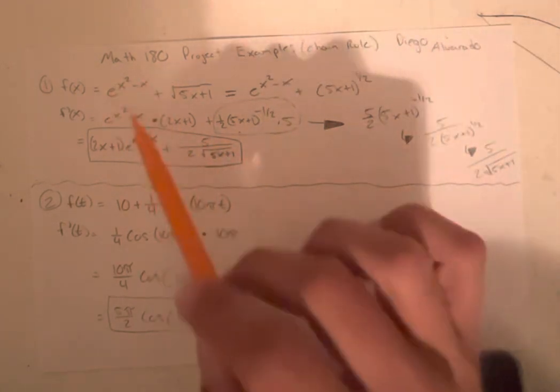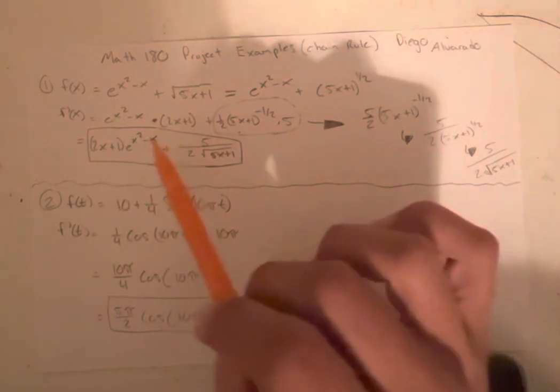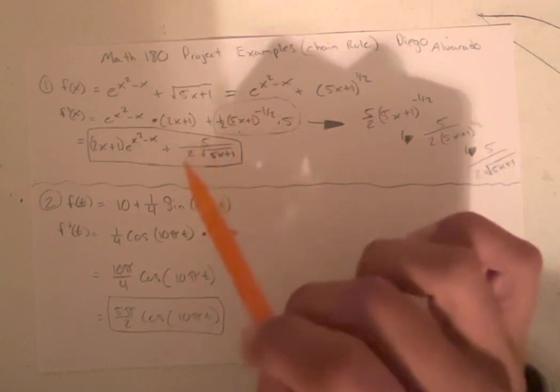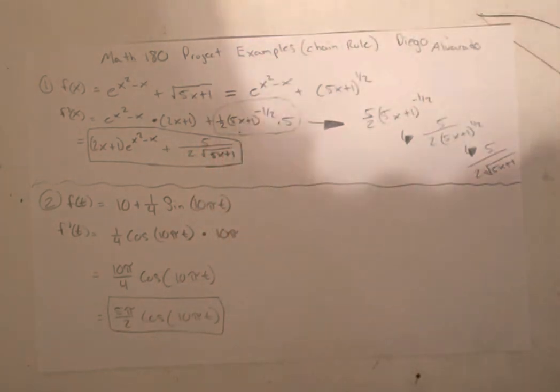And you get 2x minus 1 times e to the x squared minus x plus 5 over 2 radical 5x plus 1. That's the first one. Now let's move on to the second one.